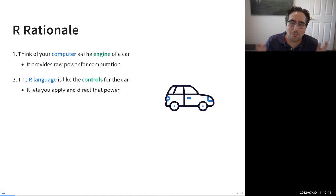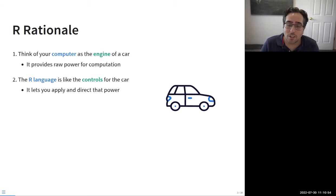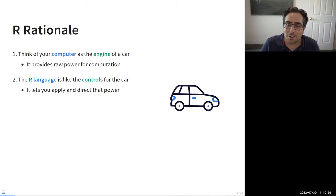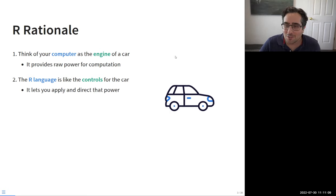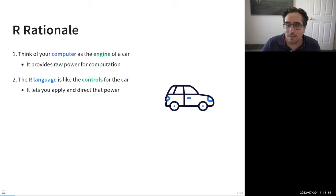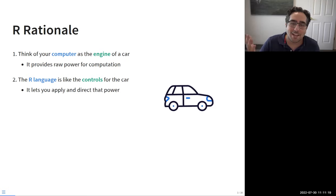In much the same way, your computer provides raw computational power — nowadays we have these miracles of technology in our pockets all the time. But we also need some way to control that power and direct it. I like to think about programming languages like R as the controls of that car — a steering wheel, pedals, shifter, that kind of thing.